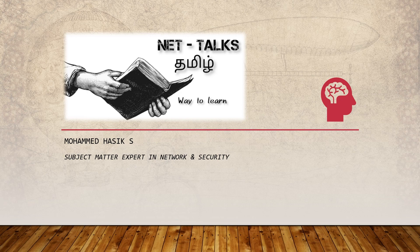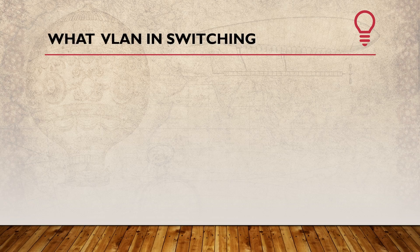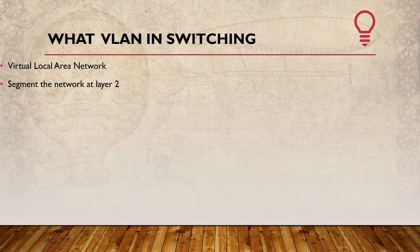Welcome to Nettalks. Today we cover the concept of VLAN - Virtual Local Area Network. VLAN is used in a switching environment to logically segregate networks. For example, one company with 10 departments - Sales, Finance, HR, Mechanical, IT - all connected in one LAN. We use VLAN to logically segregate them at Layer 2.